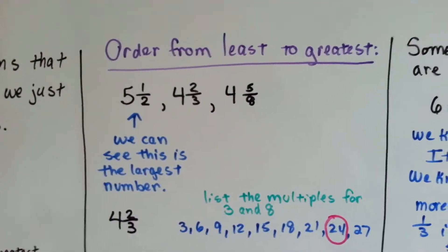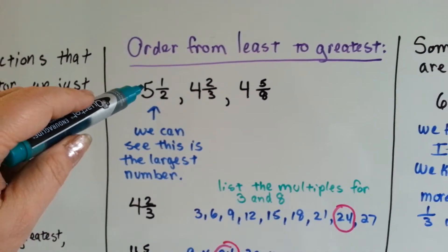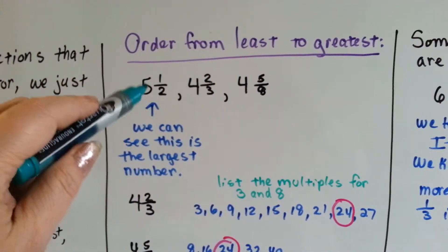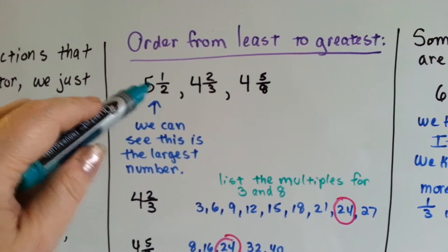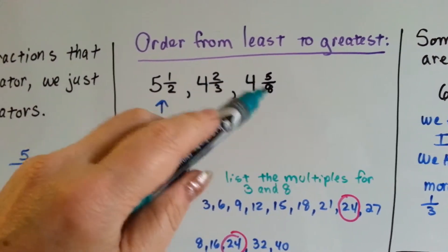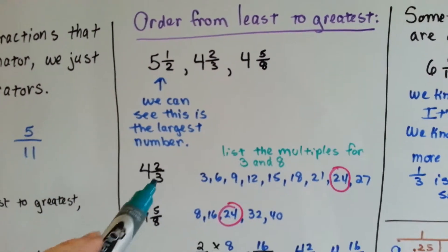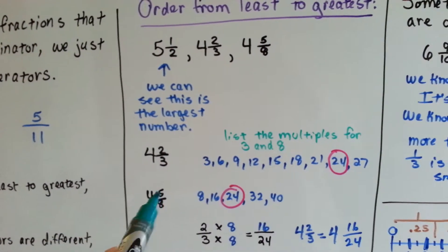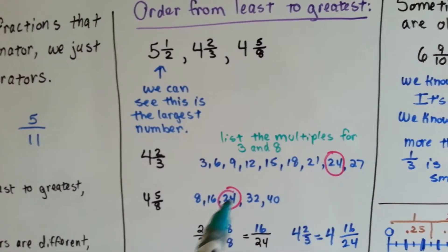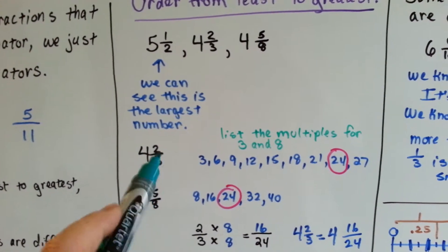To put them in order from least to greatest, we can see right away that the 5 has the biggest whole number, so we know this is going to be the last one, the greatest. It's these two that we have to worry about. So, we find their list of multiples for each one, and we find a common multiple to make the denominators the same.